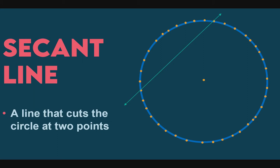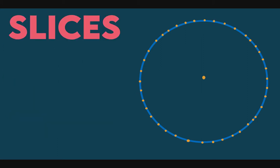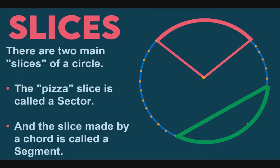The difference between a secant line and a tangent line is that a secant line touches the circle twice. Now for slices: imagine we are dividing our circle. The usual way we see a circle divided is in a pizza. There are two kinds of slices. The first uses a central angle — that is called a pizza slice or sector. When a chord is used to divide the circle, that slice is called a segment.